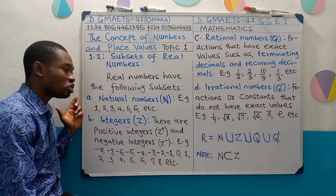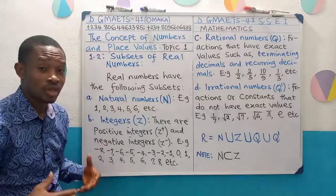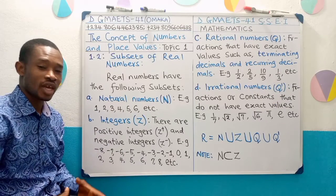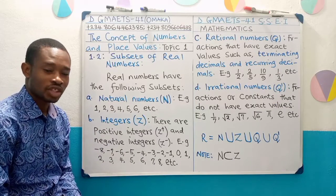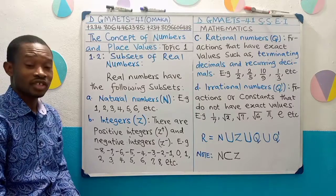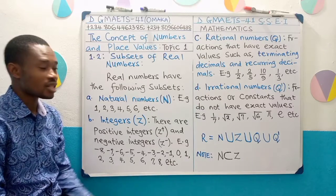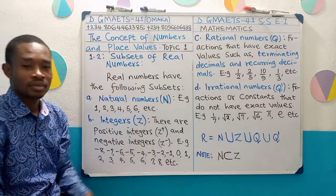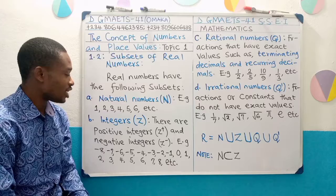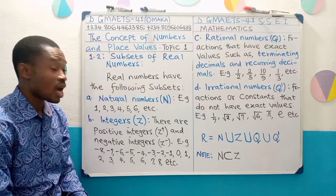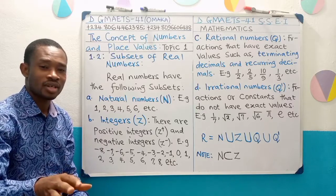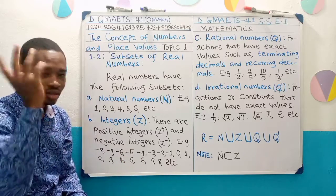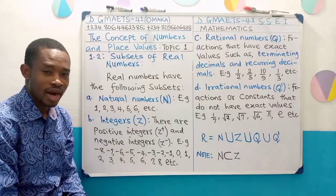We have what we call natural numbers, and we use N — capital letter N — to represent natural numbers. Examples of natural numbers are our counting numbers: 1, 2, 3, 4, 5, 6, 7, 8, and so on.